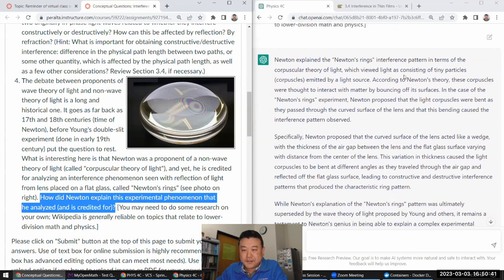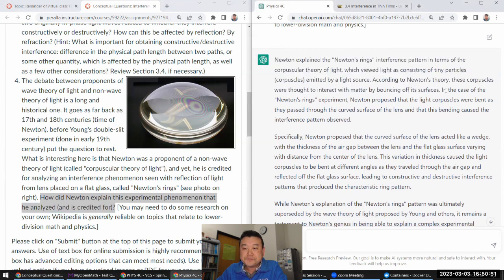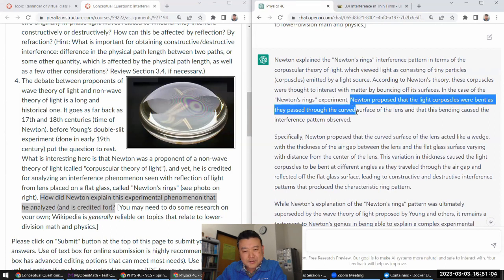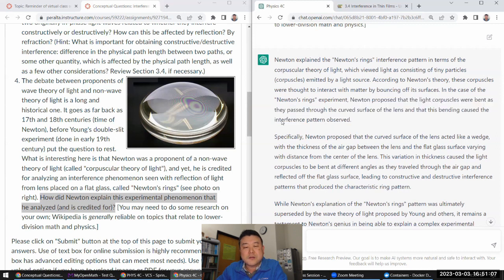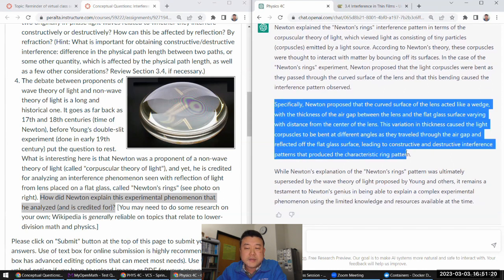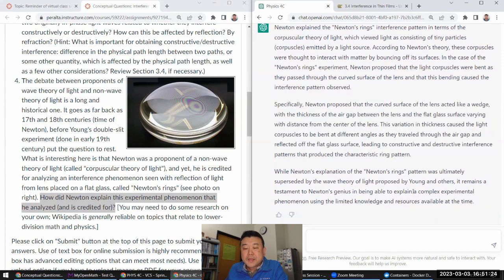What is interesting here is that Newton was a proponent of particle theory of light, corpuscular theory of light. And yet he is credited with Newton's rings, which we explain using wave feature of light. So, this is the quick question. How did Newton explain this experimental phenomenon that he analyzed and is credited for that would be naturally explained through a wave nature of light, not particle nature of light? So, ChatGPT answers this time. Let's see. In terms of the corpuscular theory, like tiny, these corpuscles were thought to interact with by bouncing. Yeah. Okay. Okay. That's the description of the corpuscular theory. Not incorrect. In the case of Newton's rings experiment, Newton's rings were banned as they passed. Yeah. He's describing refraction, which can be explained with corpuscular theory. But that has nothing to do with the interference. Because interference is a wave phenomenon. Bending doesn't cause interference. And I think basically, bend at different angles. Yeah. ChatGPT is just hallucinating facts. This is not what he described.